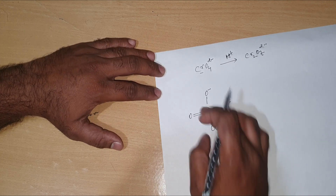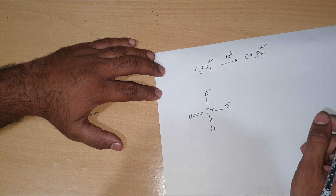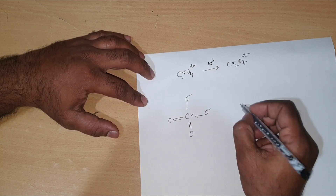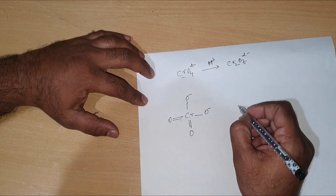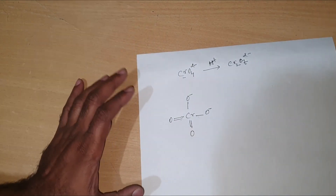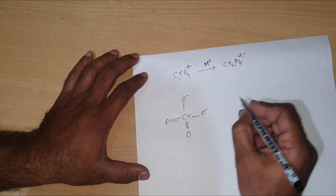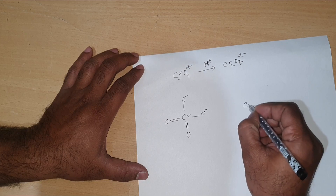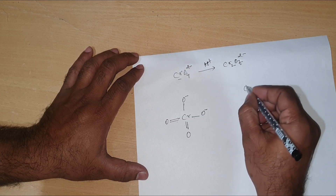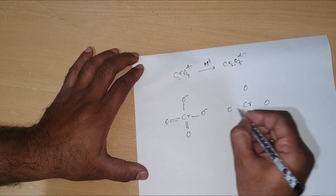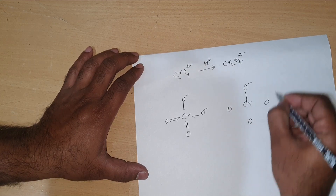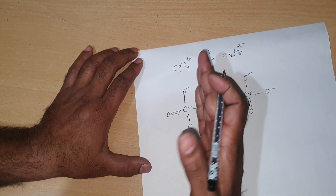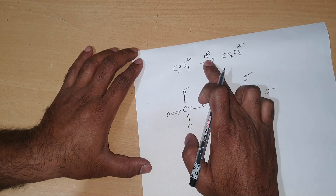For explaining the mechanism, I am going to write one more chromate ion. The chromium atom is at the center, surrounded by four oxygen atoms. The negative charges are on the single-bonded oxygen atoms, and the other two oxygen atoms have double bonds. This conversion from chromate to dichromate happens in acidic medium with the removal of an oxygen atom.